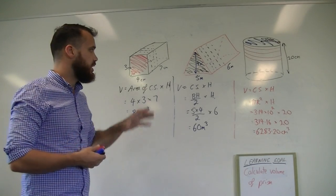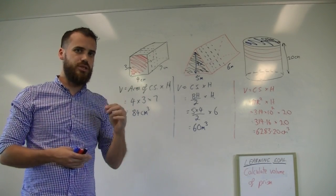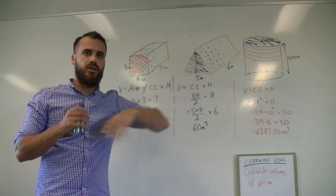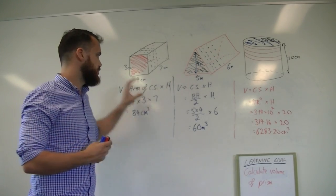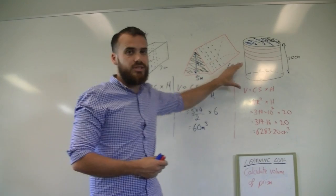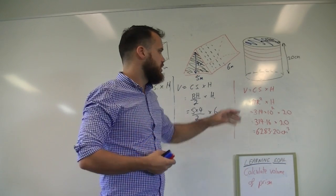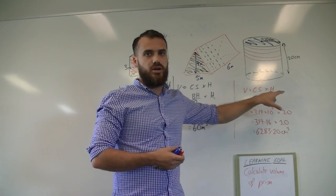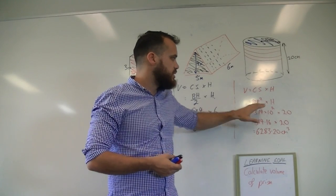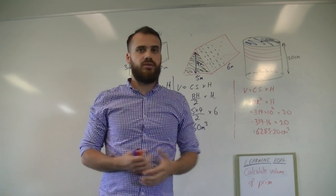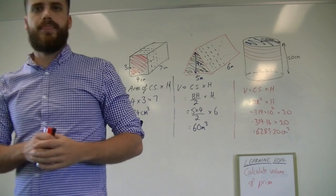So, lesson to be learned here. If you're looking for the volume of a prism, you should know what prisms are now. The formula is always the same. Whether it's a rectangular prism, a triangular prism, or a cylinder, which is a circular prism. Volume is cross section times height. Write your formula, substitute any numbers, you've got an answer.